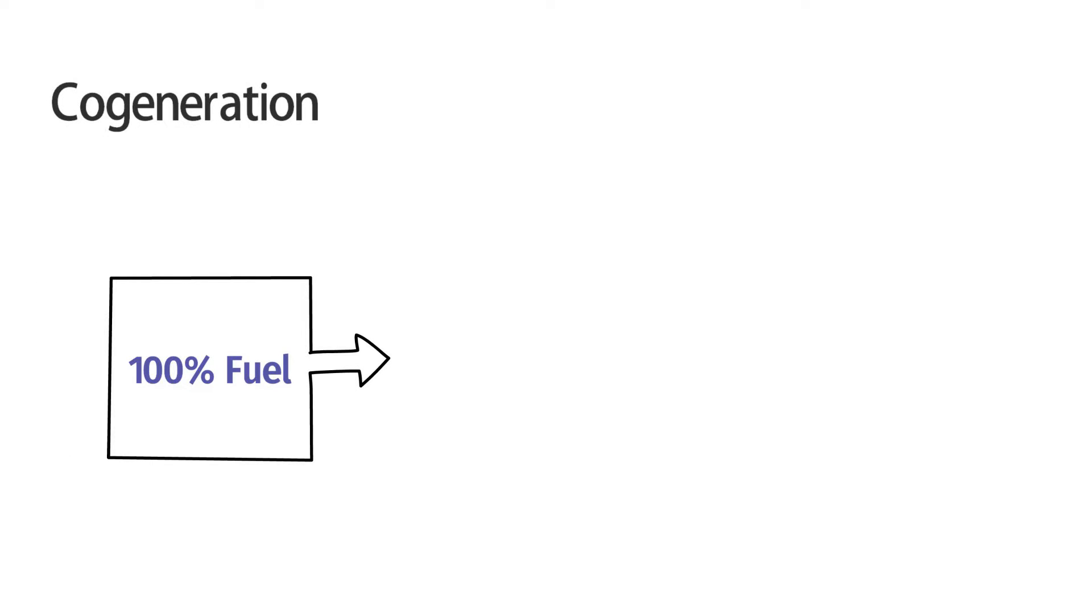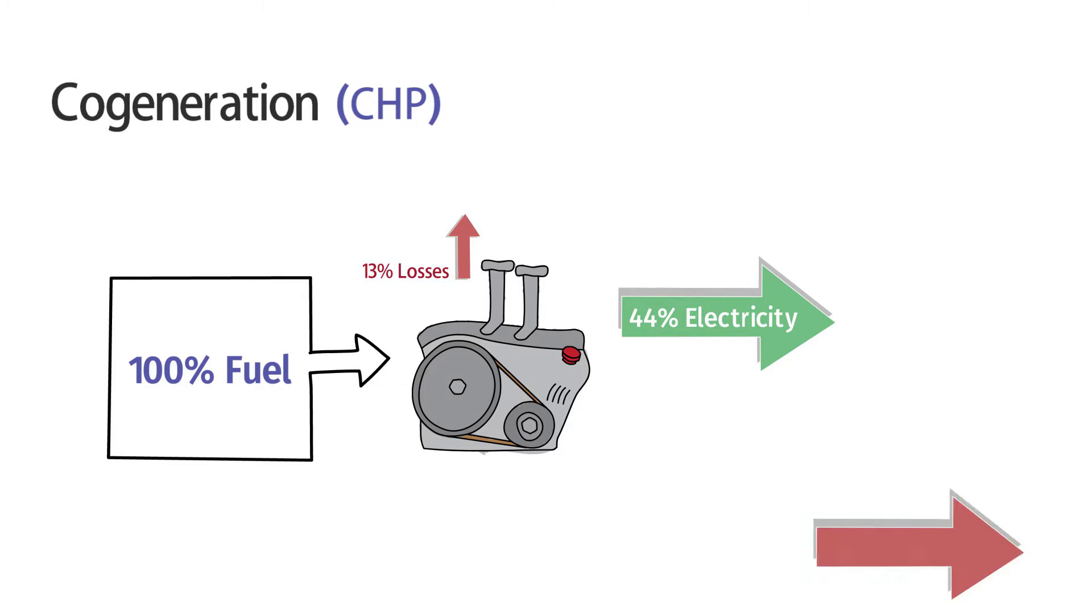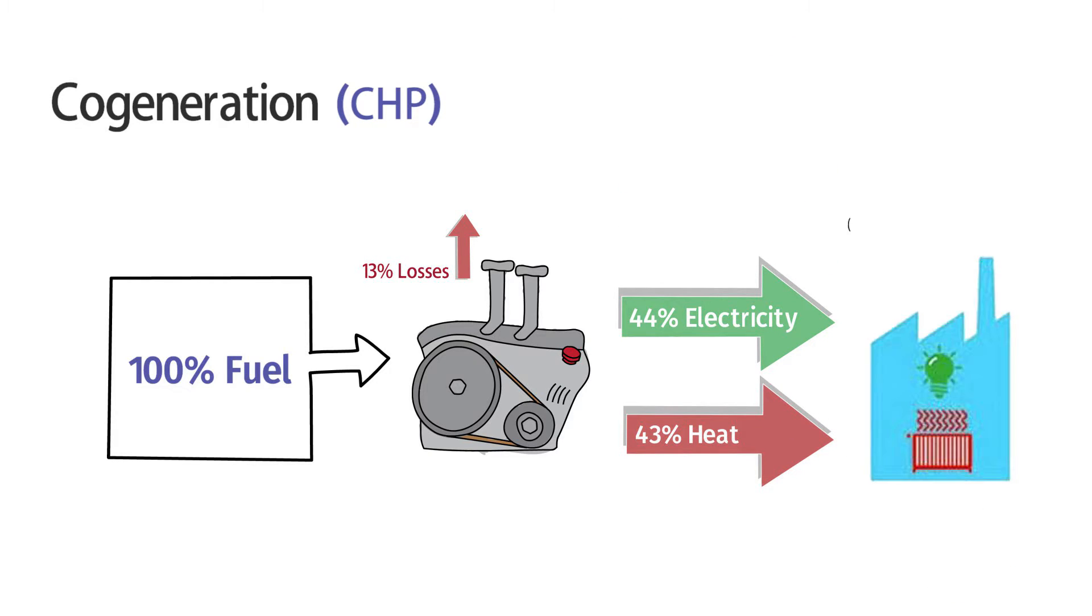Co-generation is also known as CHP or combined heat and power. It's the use of a heat engine or power station to generate electricity and useful heat at the same time.